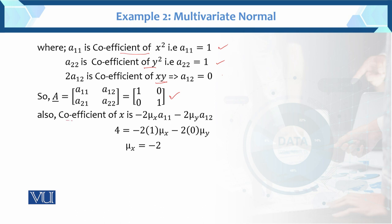Now we know the coefficient of x. Given the coefficient of x value which is equal to 4, we put this value in the coefficient equation for A. Then minus 2 times A(1,1) equals 1, and minus 2 times mu_y times A(1,2) equals 0. So mu of x is equal to minus 2.